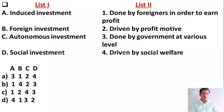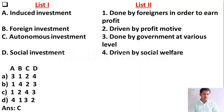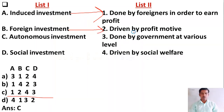Next, a match-the-following question: induced investment, foreign investment, autonomous investment, and social investment matched with — done by foreigners in order to earn profit; driven by profit motive; done by government at various levels; driven by social welfare. The right answer is Option C. Induced investment is done by foreigners in order to earn profit; foreign investment is driven by profit motive; foreigners invest in a domestic country to earn more profit; autonomous investment is driven by social welfare motive; and social investment is done by the government.